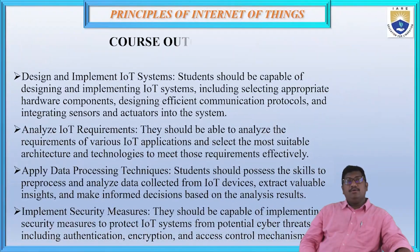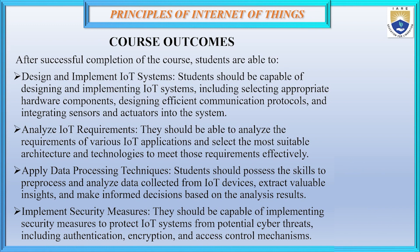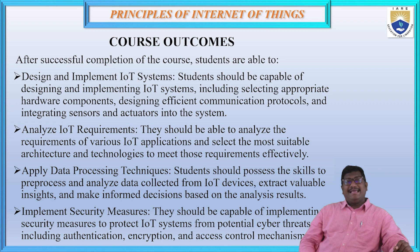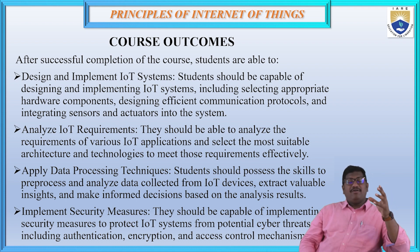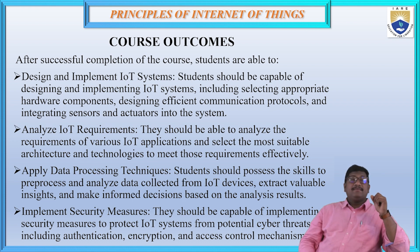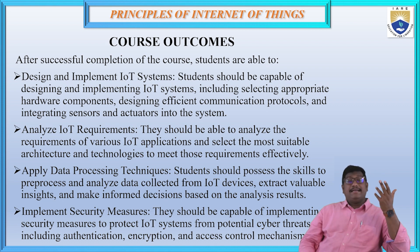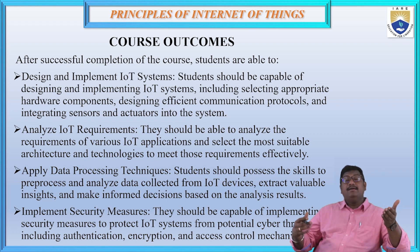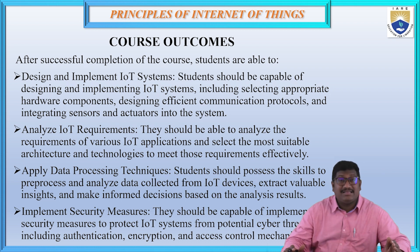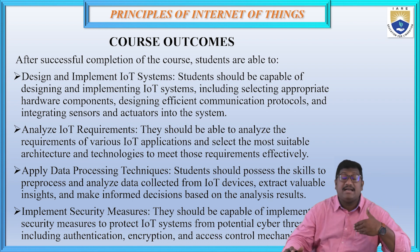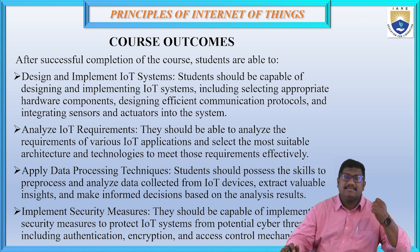After successful completion of this course by learning about five modules, students will be able to design and implement a good IoT system. For example, a home automation system is a type of application which we can design and implement physically in our homes. We are also able to analyze what kind of IoT requirements are there for a particular customer, and apply data pre-processing techniques to analyze data gathered from IoT devices and extract valuable insights.